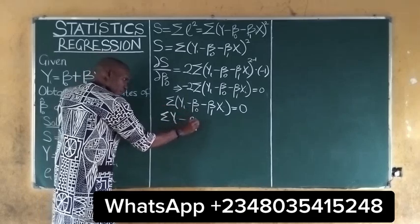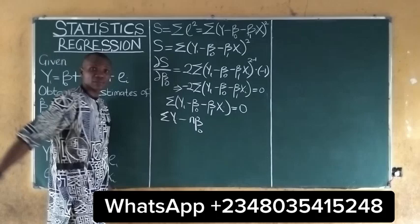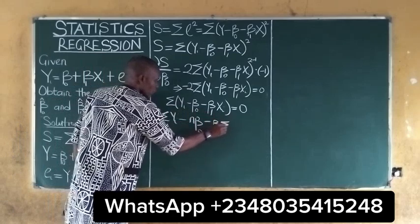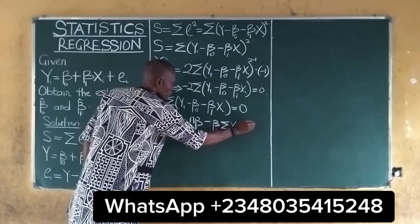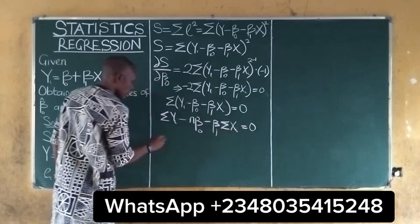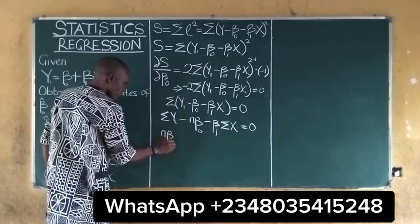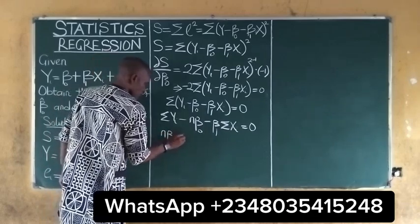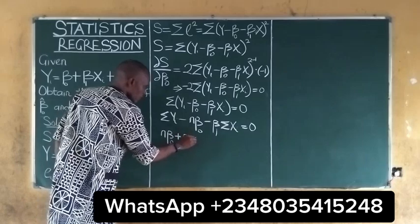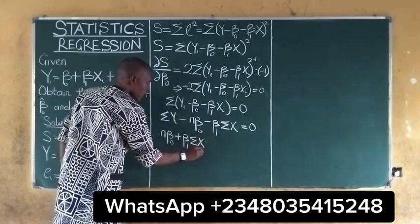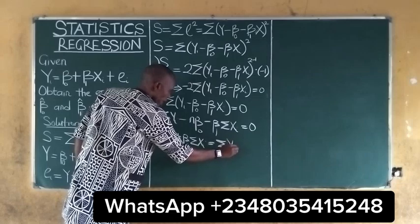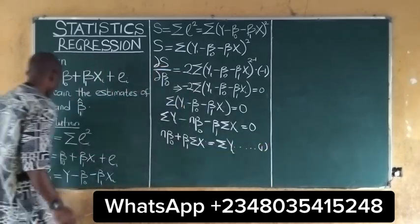if you sum a constant, you get N multiplied by that constant. Also, if you sum this, you get minus B1 summation of Xi, equal to zero. So we can rearrange to give us N*B0 plus B1*summation(Xi) is equal to summation of Yi. We can take this as our Equation 1.